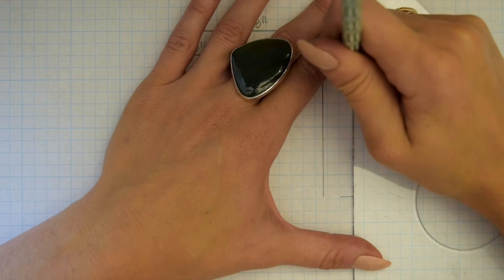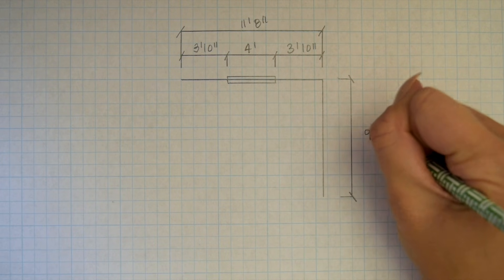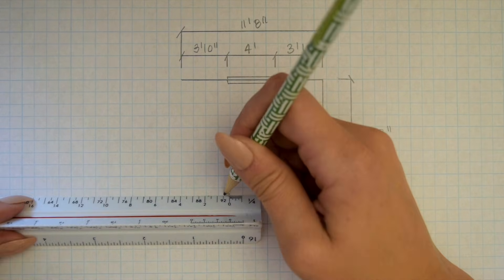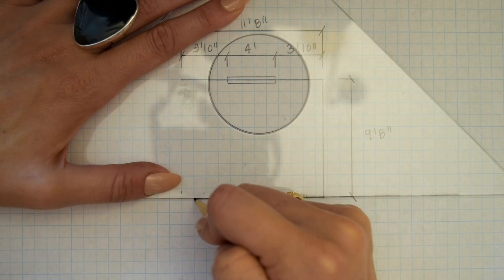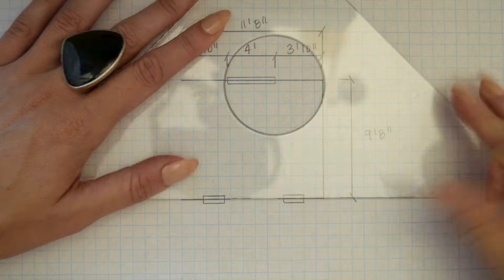For the next wall, there are no doors or windows, so I only need to show one dimension line for the length of the full wall. You'll notice that I'm leaving an open space for the door openings in my drawing. That's because my room does not have actual doors, they're only cut out passageways.